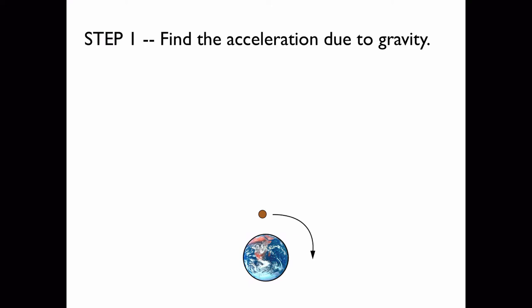Step 1 is to find the acceleration due to gravity. We can set this equal to the centripetal acceleration and then solve for the velocity. First, the known constants: the mass, the radius, and the gravitational constant.